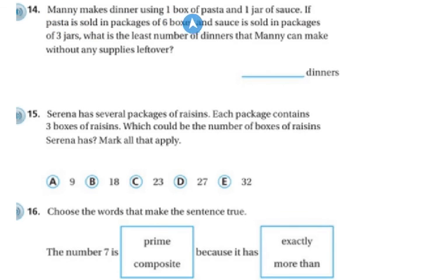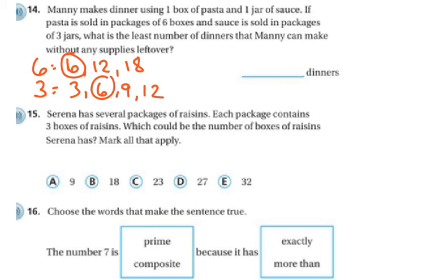The number 27 is a factor of 9, and that is false. What multiple of 7 is also a factor of 7? That would be 7. Manny makes dinner using one box of pasta, one jar of sauce. If pasta is sold in packages of 6 boxes and sauce is sold in packages of 3 jars, what is the least number of dinners Manny can make without having supplies left over? You're going to list out your multiples and find the first one they have in common. 6 is going to be it, so you can make 6 dinners.